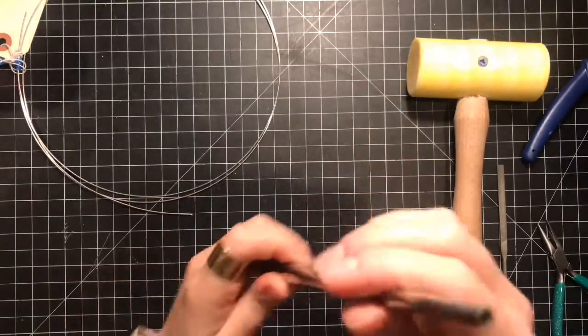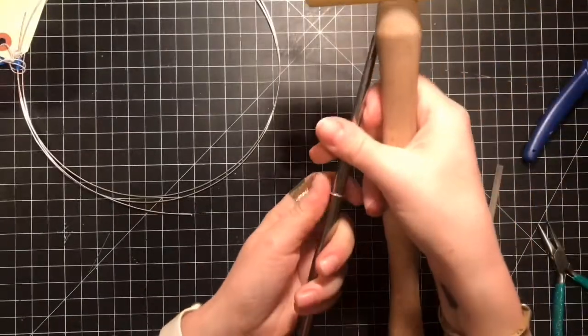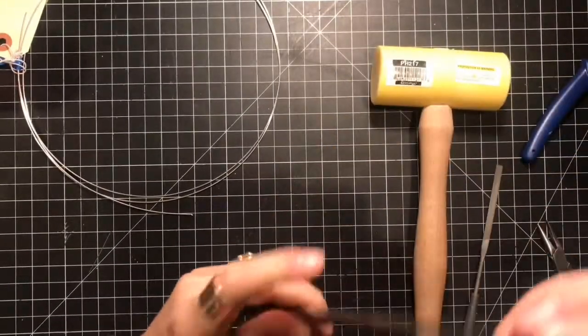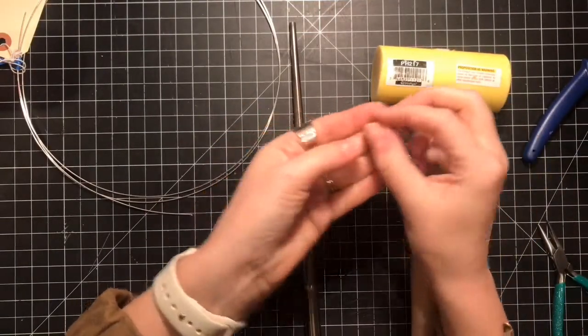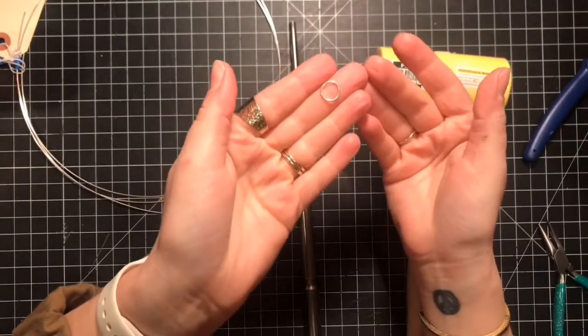Maybe do one last check making sure this is all round. This is a good way to make jump rings too if you just need one or two jump rings. So here's my earring.